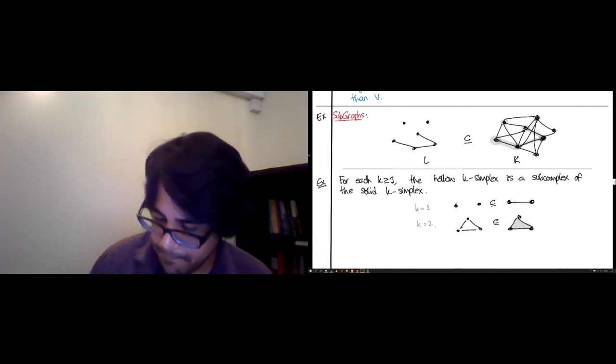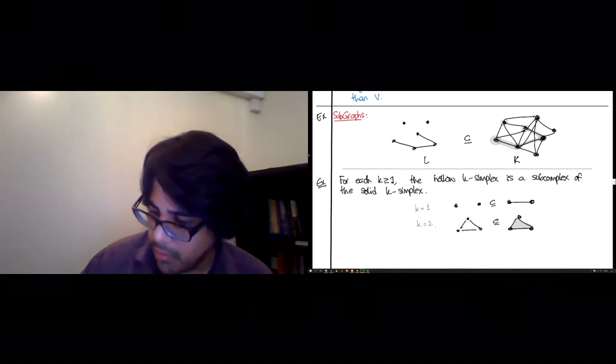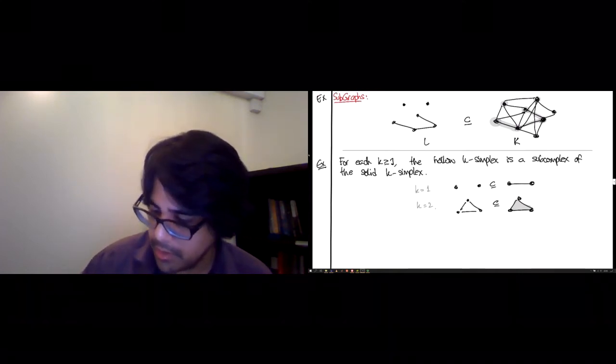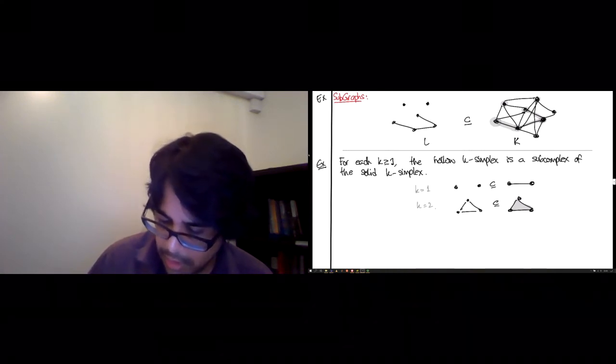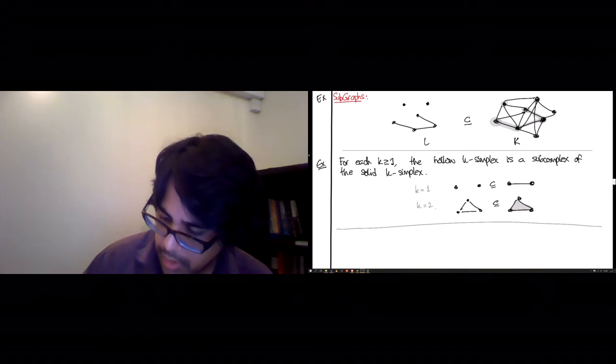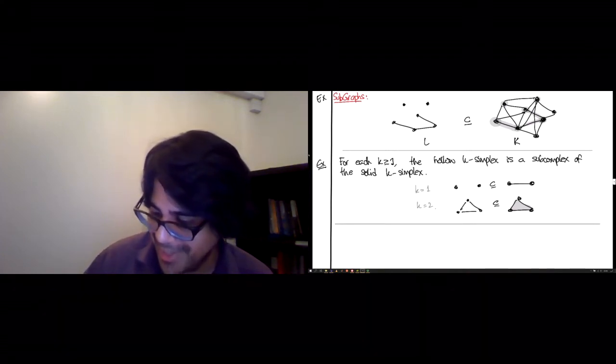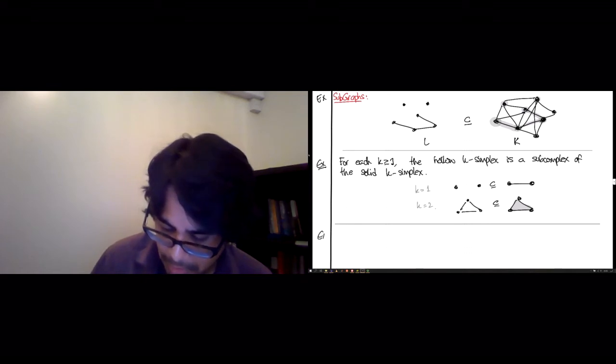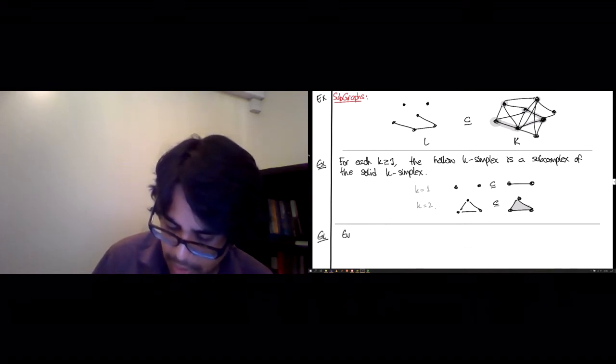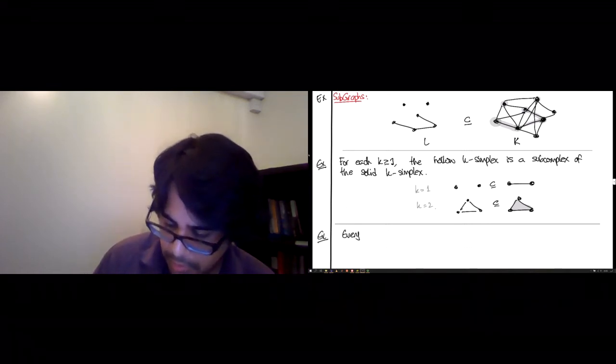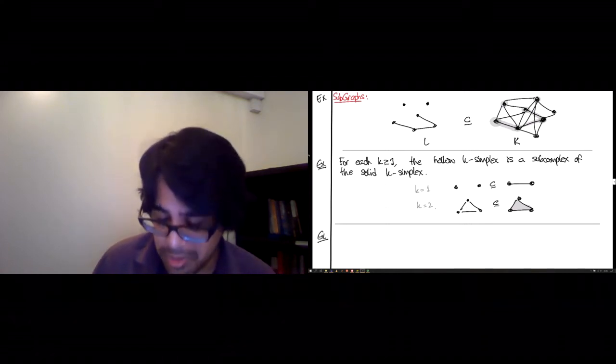Of course, maybe we should end this series of examples with the silliest example, which I don't think offers too much enlightenment about the structure of subcomplexes, which is K is its own subcomplex.